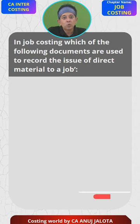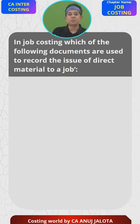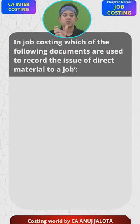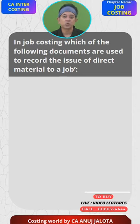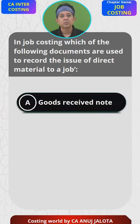Do not send them to the stores department because these are special materials required for the job. So you directly issue it where the job is being manufactured. The slip or voucher that is prepared at that time — what is it called? Please bring the four options: A is goods received note, B is material requisition.